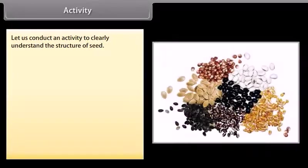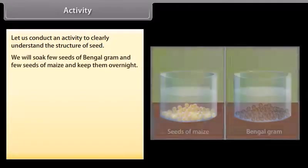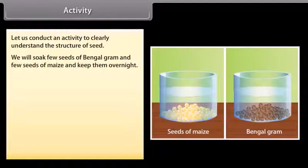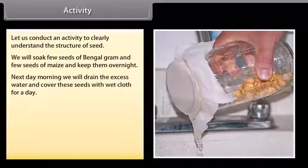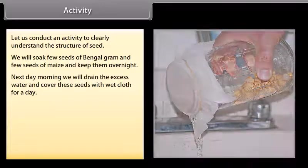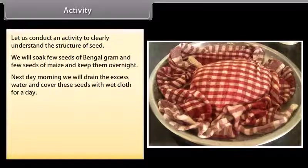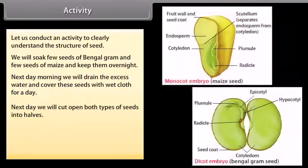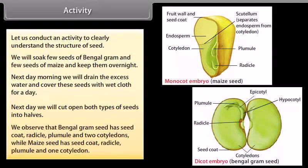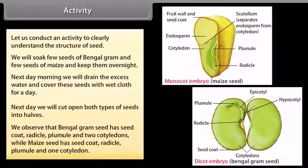Let us conduct an activity to clearly understand the structure of a seed. We will soak a few seeds of Bengal gram and a few seeds of maize and keep them overnight. Next morning we will drain the excess water and cover these seeds with wet cloth for a day. Next day we will cut open both types of seeds into halves. We observe that the Bengal gram seed has a seed coat, radicle, plumule, and two cotyledons, while the maize seed has a seed coat, radicle, plumule, and one cotyledon.